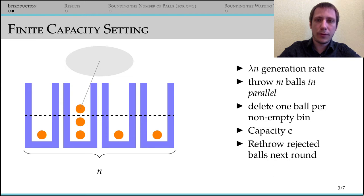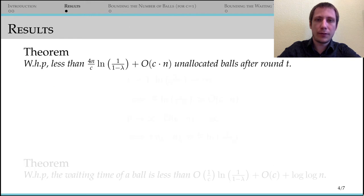We show that starting from an initially empty system, there exists an upper bound on the number of balls that we throw in any given round. This bound on the number of balls is proportional to the number of bins.